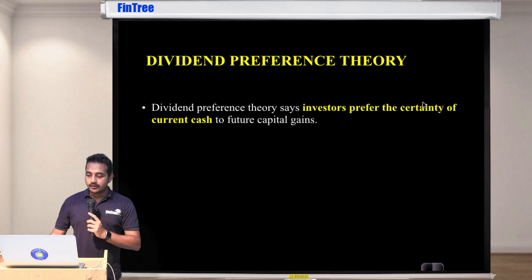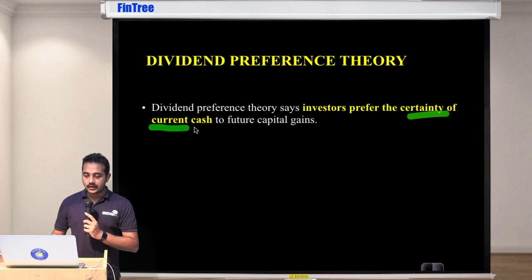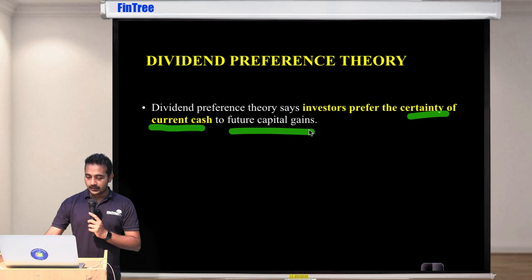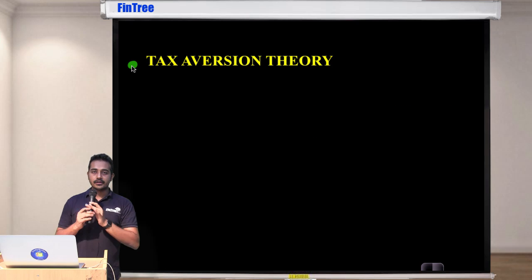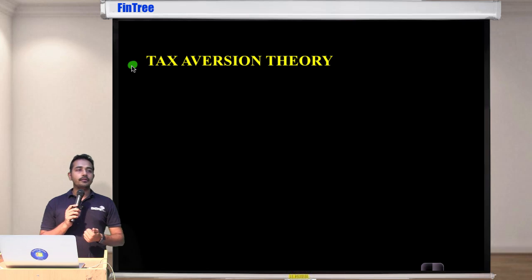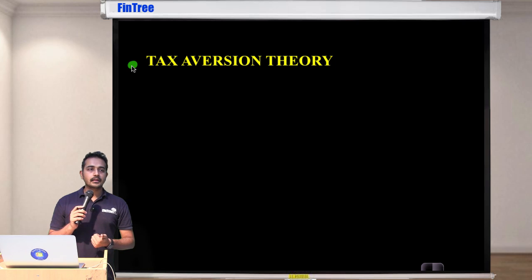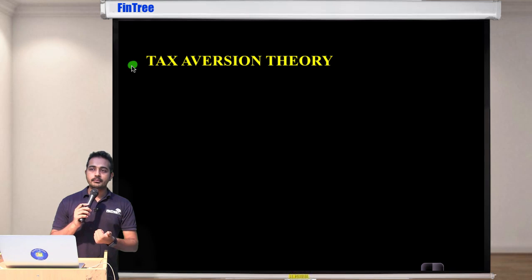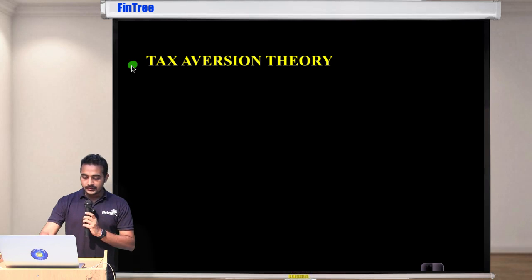So investors prefer certainty of current cash to future capital gains. Next theory is tax aversion. So there are three of them we have seen two - first one was dividend irrelevance theory which was by Modigliani and Miller, then dividend preference theory by Lintner and Gordon, and now tax aversion theory.